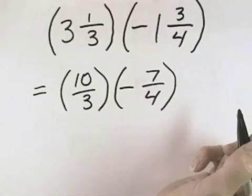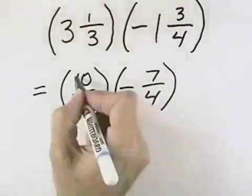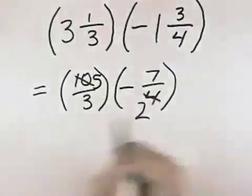Before we multiply, we can also cross-cancel. We have a factor of 2 in both the numerator here, canceling the 2 out leaves 5, and the denominator here, canceling the 2 out leaves 2.